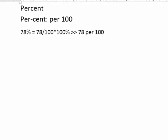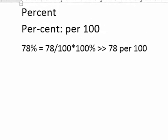In this video, I'd like to give you a brief introduction to percent. The word percent means per 100. So 78% with the percent sign mathematically means 78 divided by 100 times 100%.